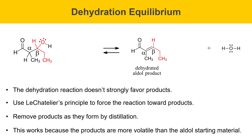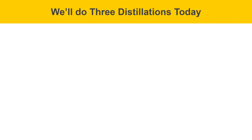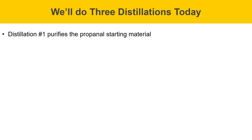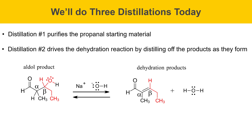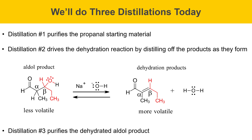The dehydrated aldol product lacks the hydroxy group of the aldol product and therefore boils much lower. This gets to the procedural steps, which involve three distillations. The first distillation purifies the propanol starting material. The second distillation drives the dehydration reaction by distilling off the products as they form — the aldol product forms quickly, but the dehydration needs extra help from removing the more volatile dehydration products. The third distillation purifies the final dehydrated aldol product.